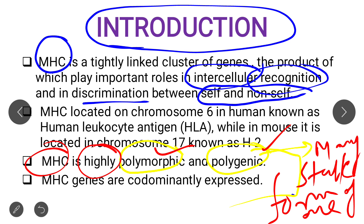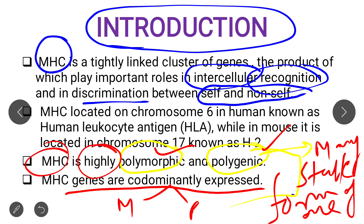The last point is that MHC genes are co-dominantly expressed. Co-dominantly expressed means it is transcribed from both maternal as well as paternal chromosomes. That is why it is known as co-dominantly expressed — because it is transcribed from both maternal and paternal chromosomes.